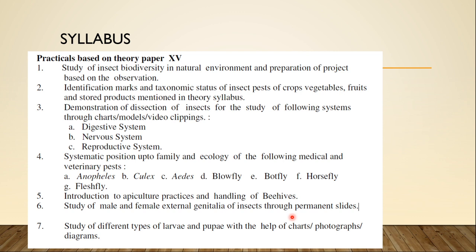If you are going to make your content according to the syllabus, you should know what your syllabus is. I am going to give you the practical syllabus based on theory paper 15. The first topic is study of insect biodiversity in natural environment and preparation of a project based on observation — this project is made in a separate file, so I will not talk about it here. The second topic is identification marks and taxonomic status of insect pests of crops, vegetables, fruits, and stored products mentioned in the theory syllabus.